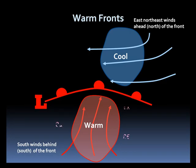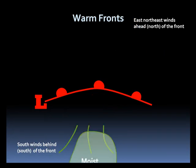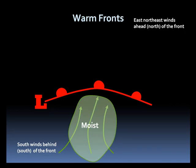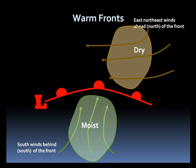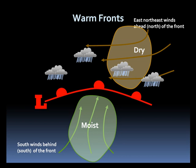Look for rising temperatures with a warm frontal passage. Moisture will come with this warmer air mass, with drier air associated with the cooler air mass. These conditions, all together, provide clouds and possibly some precipitation ahead of the warm front, while warm, humid, and clearer conditions will be located behind it.